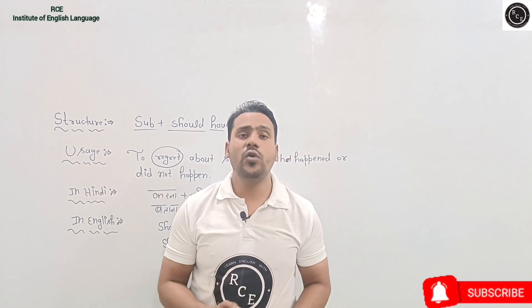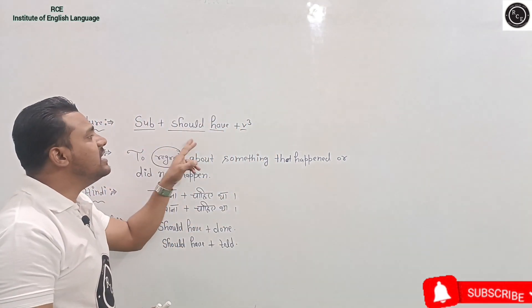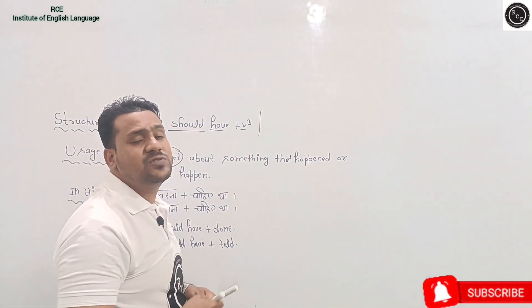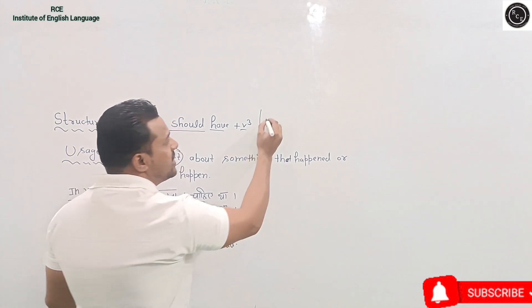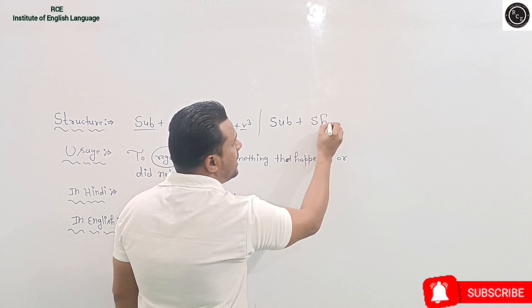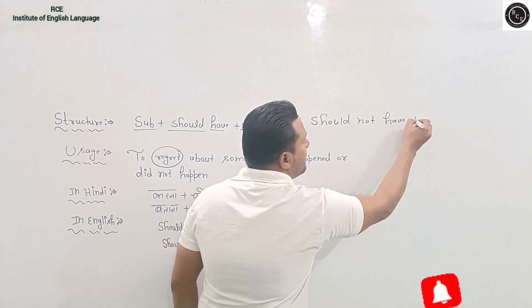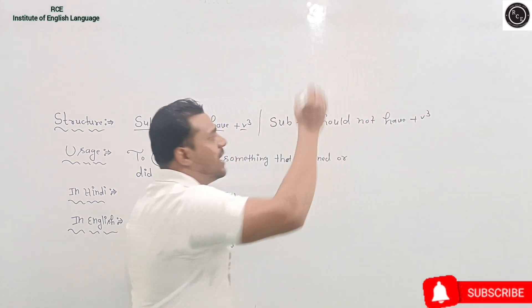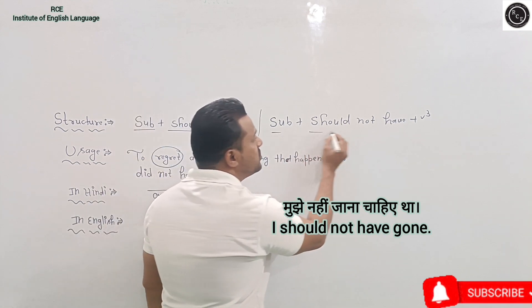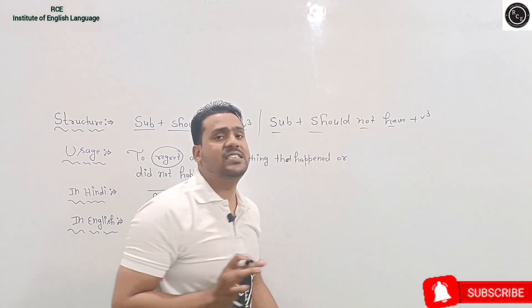So when someone should have done something in the past, we use this structure. And if we are expressing regret in a negative sense — jab hum negative sense mein afsos zahir kar rahe hain — then we use 'should not have,' followed by the third form of the verb. The 'not' comes between 'should' and 'have.' For example, mujhe nahi jana chahiye tha = I should not have gone.